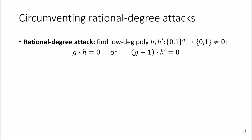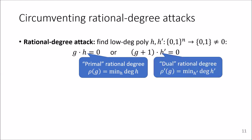So how to overcome this? The idea is to consider the two cases of the rational degree attack separately. So call the minimal degree of h such that g times h equals zero, the primal rational degree.